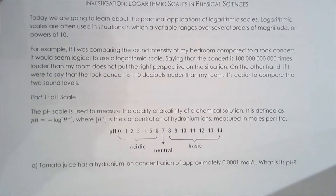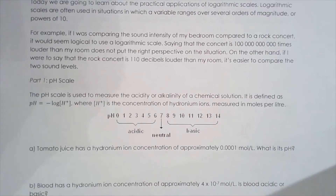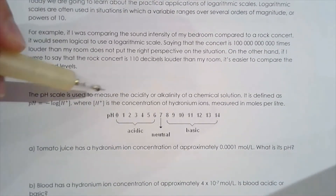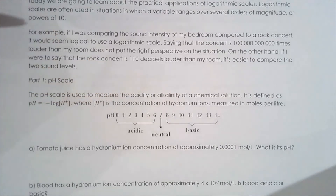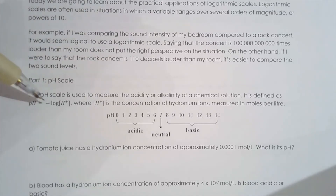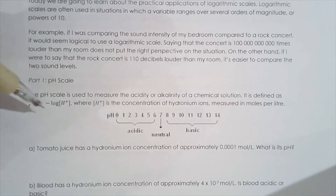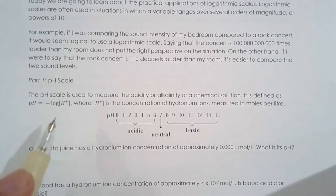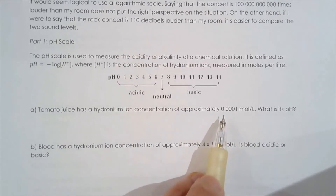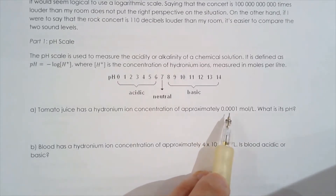The first scale we're going to talk about is the pH scale. The pH scale is used to measure the acidity or the alkalinity of a chemical solution — you study this in grade 10 science. It's defined as: the pH of a solution is equal to negative log of H+. H+ is the concentration of the hydronium ions. So when we talk about the concentration of hydronium ions, we can have something like 0.0001 moles per liter.